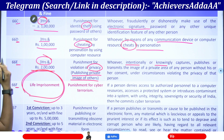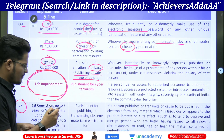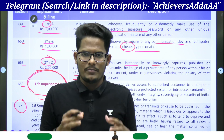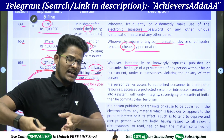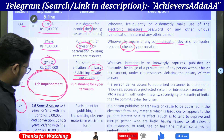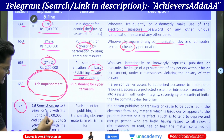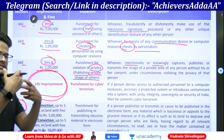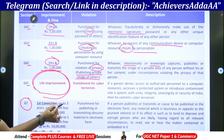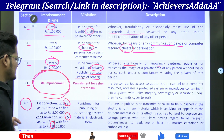Now section 67 — punishment for publishing or transmitting obscene material in electronic form. Some material which is not in electronic form — you are trying to convert it into electronic form and publishing it on your own when it does not belong to you. In such case, first conviction: up to three years or five lakh or both. Second conviction — if you are continuously doing the same thing — up to five years and the amount will become double, that is 10 lakhs.